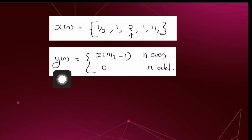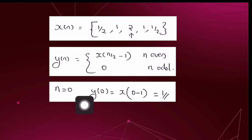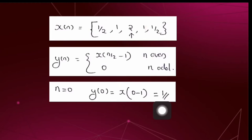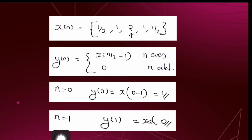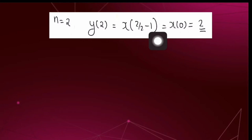When we substitute n = 0, we get y[0] = x[0/2 − 1] = x[−1]. The value of x[−1] is 1, so we get y[0] = 1. We can directly write y[1] = 0 since n = 1 is odd. Next, substituting n = 2, we get y[2] = x[2/2 − 1] = x[0], and x[0] = 2.